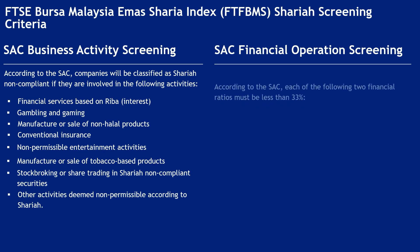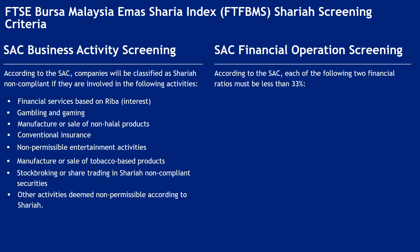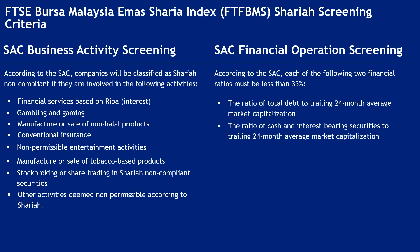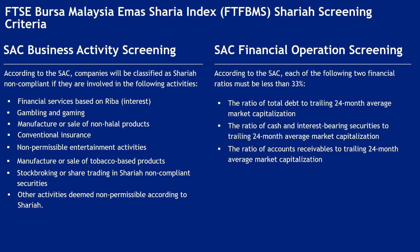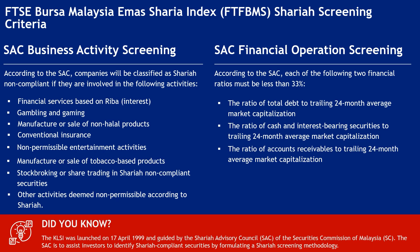SAC Financial Operations Screening. According to the SAC, each of the following financial ratios must be less than 33%: the ratio of total debt to trailing 24-month average market capitalization; the ratio of cash and interest-bearing securities to trailing 24-month average market capitalization; and the ratio of accounts receivables to trailing 24-month average market capitalization. The KLSI was launched on April 17, 1999, guided by the Shariah Advisory Council of the Securities Commission of Malaysia, to help investors identify Shariah-compliant securities.